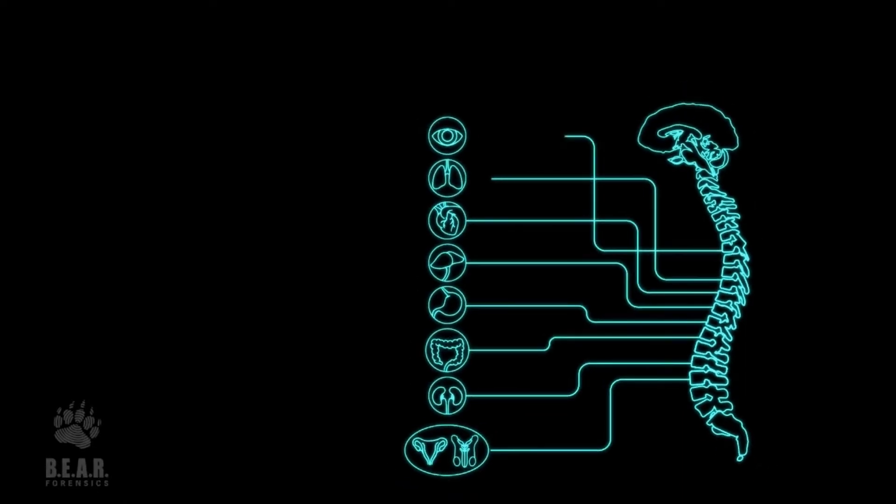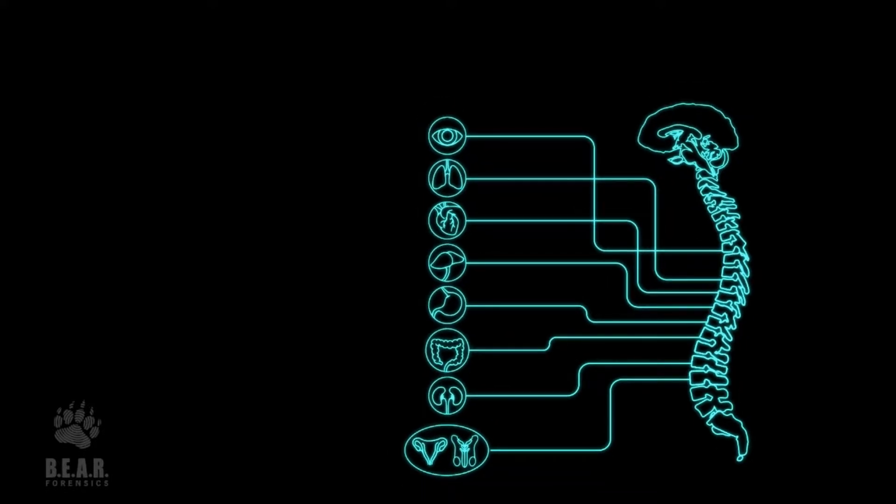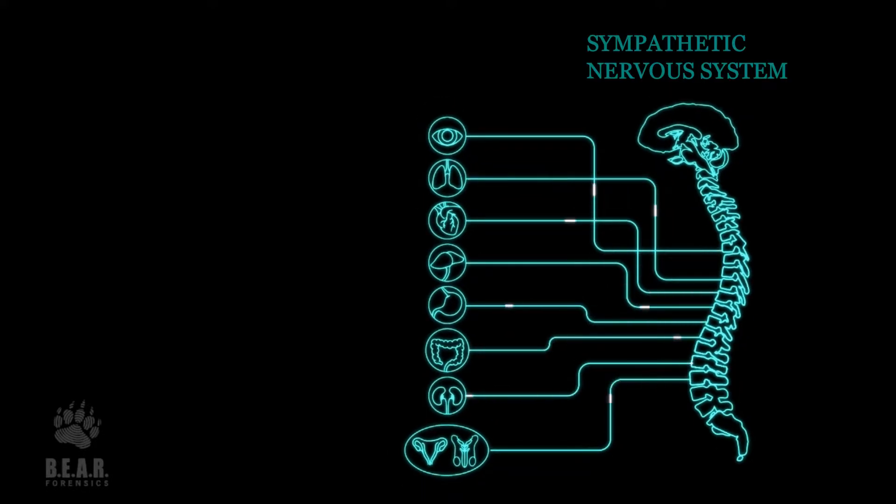The autonomic nervous system is also responsible for our defense system. So whenever we feel in danger, it triggers what's called the three Fs: the fight, flight, or freeze, by triggering the sympathetic nervous system.